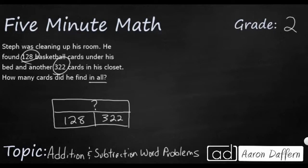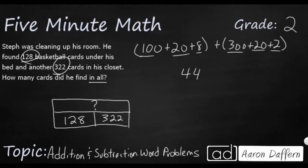So if we want, we could break this up. 100 plus 20 plus 8. So that's our 128. And then we could add that with 322. 300 plus 20 plus 2. And then you just add place value at a time. So 100 and 300 is going to be 400. 20 and 20 is going to be 40. And then 8 and 2 is going to be 10. So that's going to be 440 plus 10. So we just need to make it 450.